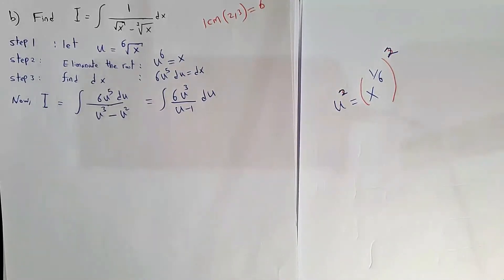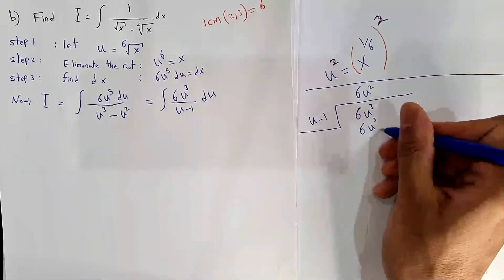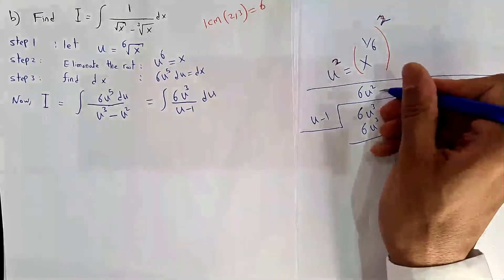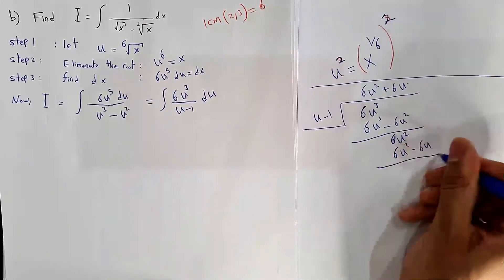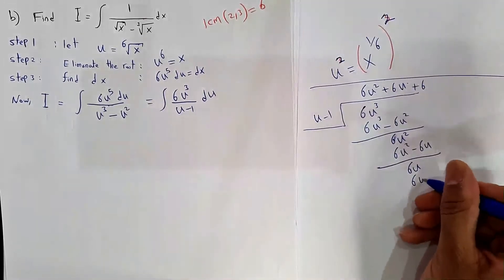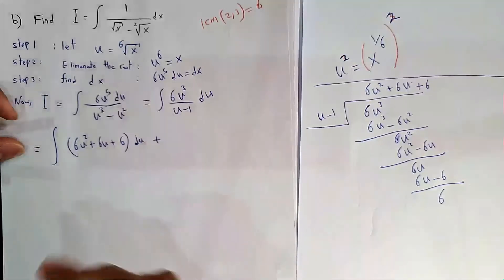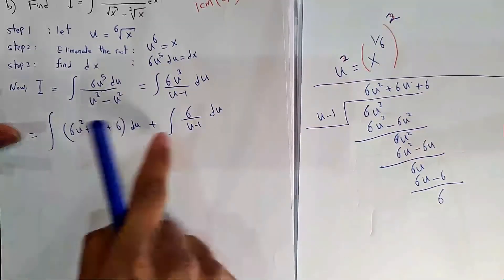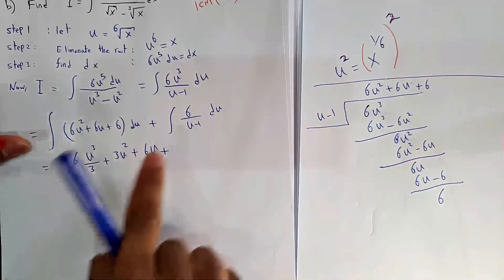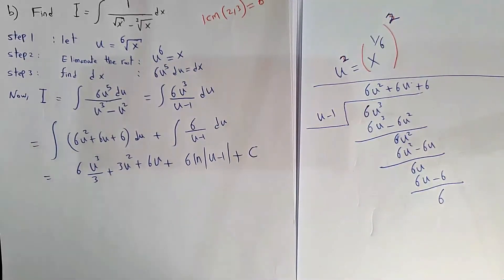We proceed with long division of 6u³ ÷ (u−1). Dividing: 6u³/u = 6u², multiply to get 6u³−6u², subtract to get 6u². Divide again: 6u²/u = 6u, multiply to get 6u²−6u, subtract to get 6u. Divide again: 6u/u = 6, multiply to get 6u−6, subtract to get remainder 6. Integrating: 6u³/3 + 3u² + 6u + 6 ln|u−1| + C. Substitute u = x^(1/6) to get the final answer.